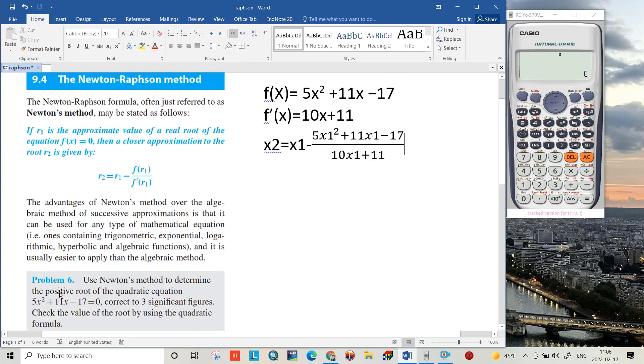That is the function we have: 5x² + 11x - 17. If we derive this function it will be 10x + 11.